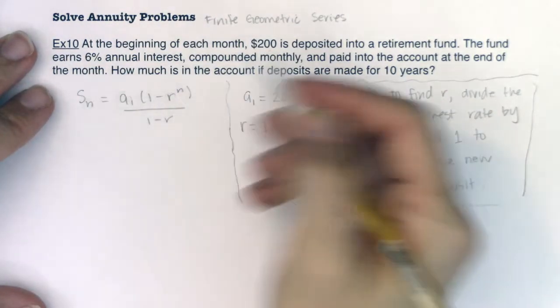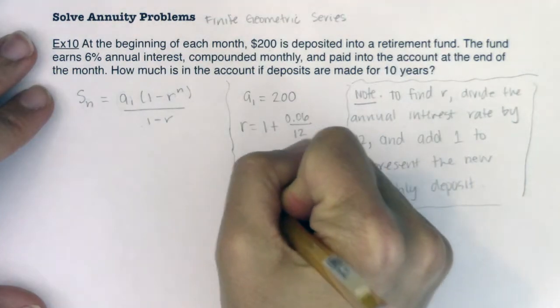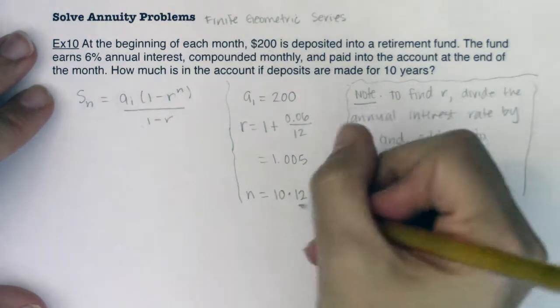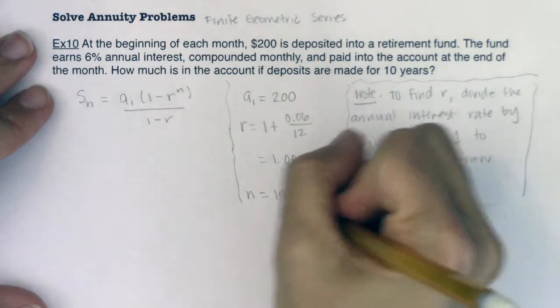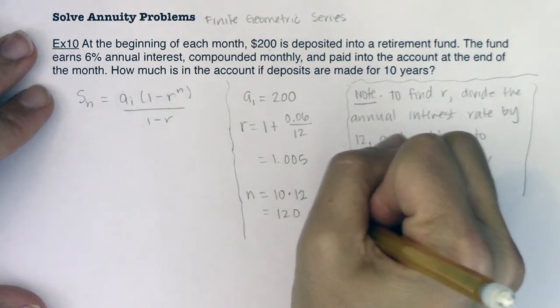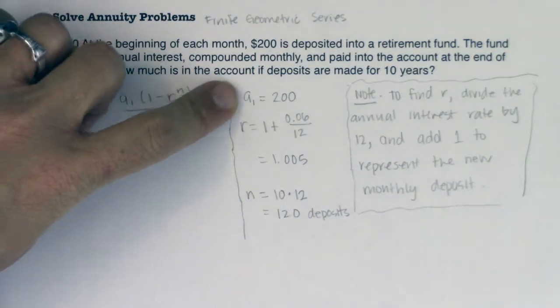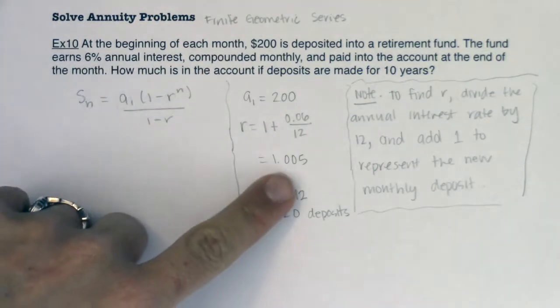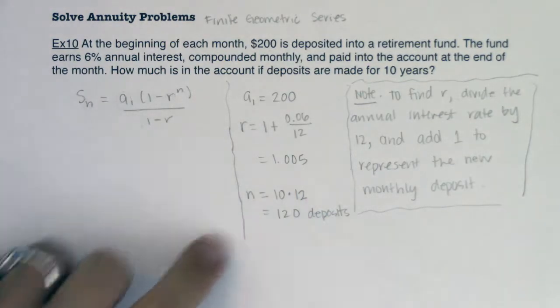The last thing I need is n. How many deposits am I actually going to make over the course of 10 years? n in this case is my 10 years times 12 months. Please don't forget that, yes, you're doing this for 10 years, but you're making monthly payments. So you're actually ultimately going to make 120 deposits. I started with $200. My interest rate is 1.005 for my r value each month, and I'm going to do this 120 times.